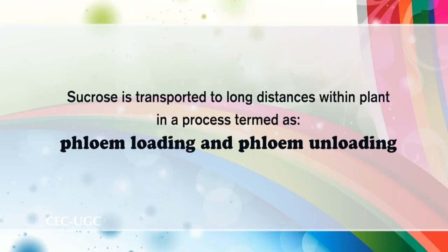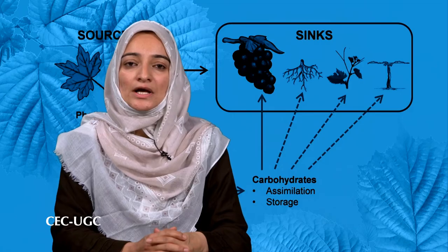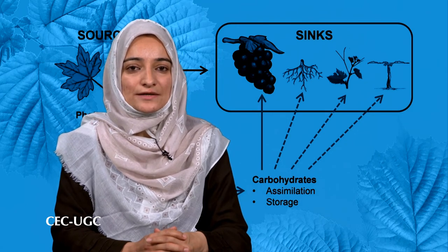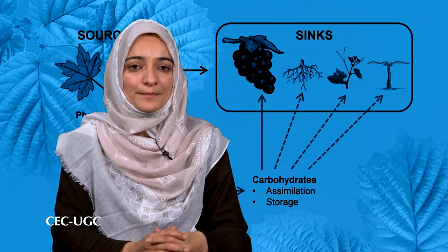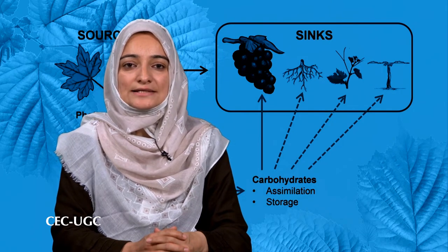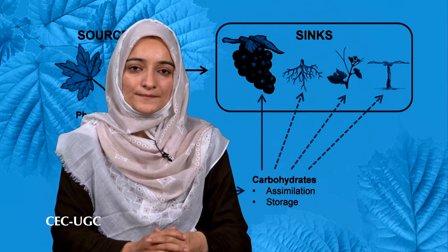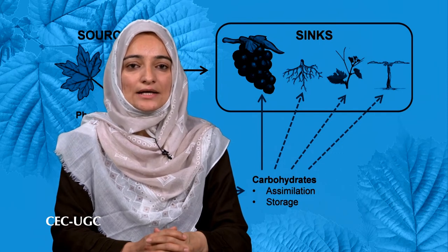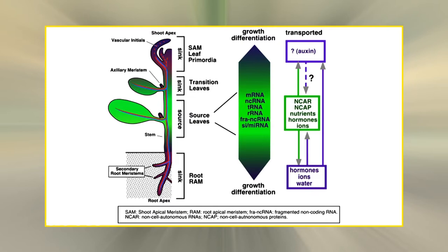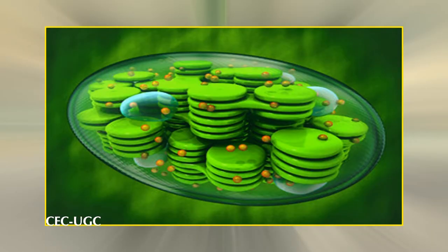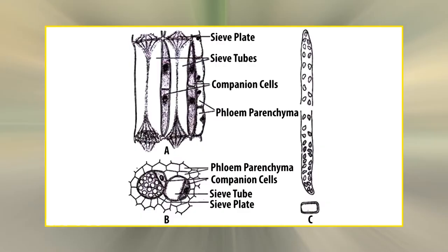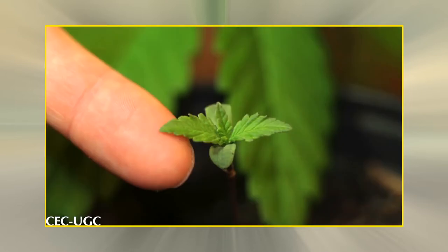Now let us discuss how sucrose is transported over long distances within the plant, in a process termed phloem loading and phloem unloading. The phloem cells of the plant's vascular system carry out long-distance transport between the specialized tissues of source and sink organs. The long-distance transport is accomplished by loading sucrose into the phloem at the source and unloading it at the sink. Movement of photosynthate from the mesophyll chloroplasts to the sieve elements of mature leaves is called phloem loading.